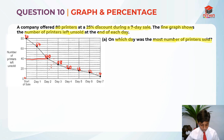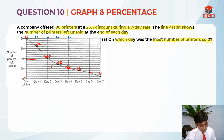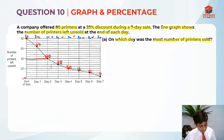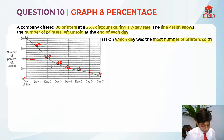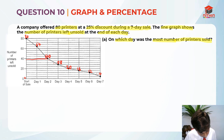A common misconception is that each day there are 80 printers. But that is not true — it's only 80 at the start of the sale. The rest of the days are not 80. So it is wrong to assume 80 on each day. This is how the graph looks after you've labeled it — it follows the 4 times table.